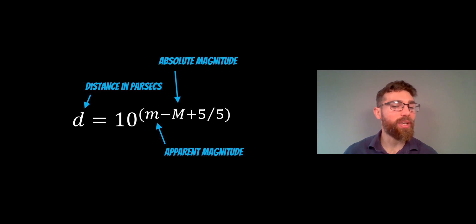And when we do that, we can then use this equation here. So the apparent magnitude is what we measure. That's how bright it appears to us. The absolute magnitude is what we've just read off that plot because we know what the period is. And when we do that, we can actually get a distance to that object in parsecs. So it's a very useful technique.